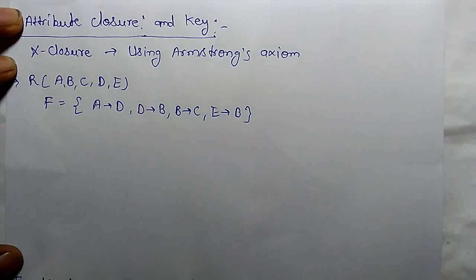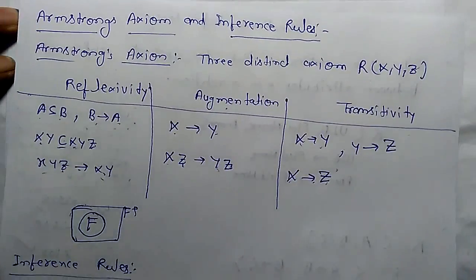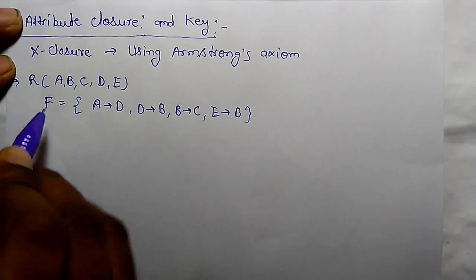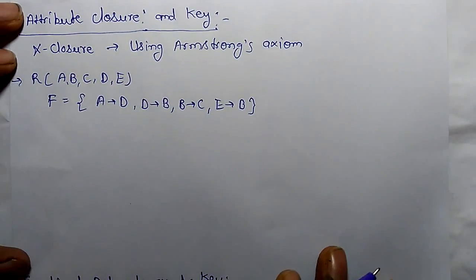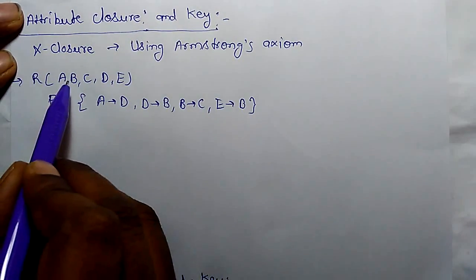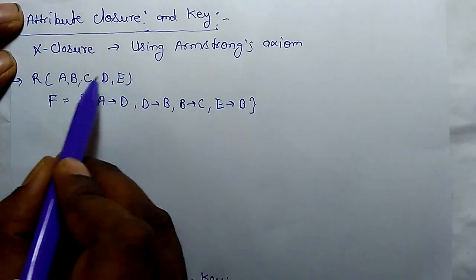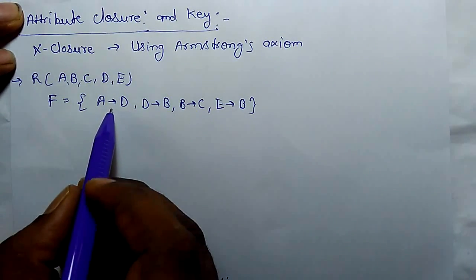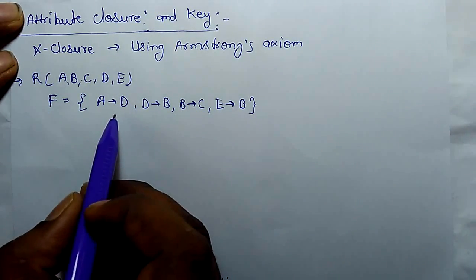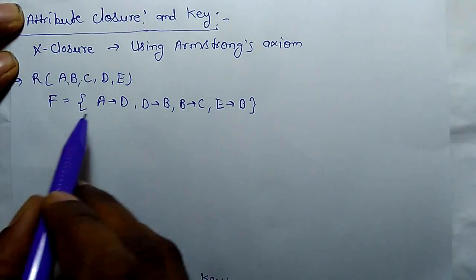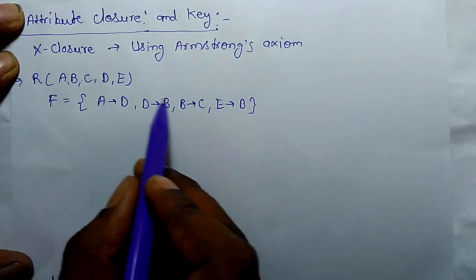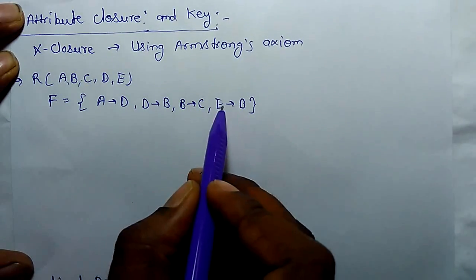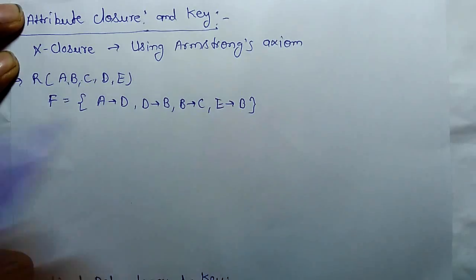Armstrong's rules are: reflexivity, augmentation, and transitivity. There is a relation that has five attributes A, B, C, D, E. The functional dependencies are: A determines D, D determines B, B determines C, and E determines B.